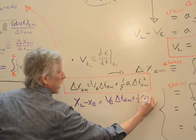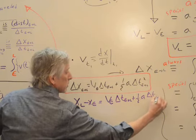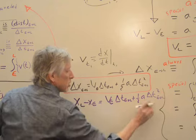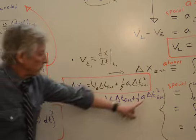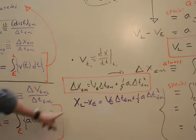v plus 1 half a delta t earlier. The el is annoying, so people often don't even write it. But when you get confused, this will help you. So if you write it right now, it's good training. So you could write it like that.